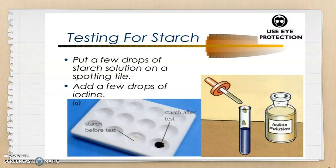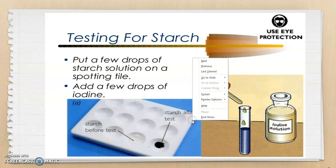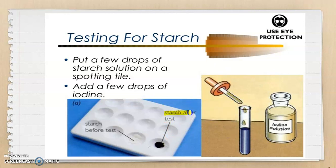The starch test can also be carried out: put a few drops of starch solution on a spotting tile and add a few drops of iodine solution. If starch is present, the color of the iodine solution changes from brown to blue-black. The diagram shows the blue-black color result when starch is detected, compared to the appearance before adding iodine.